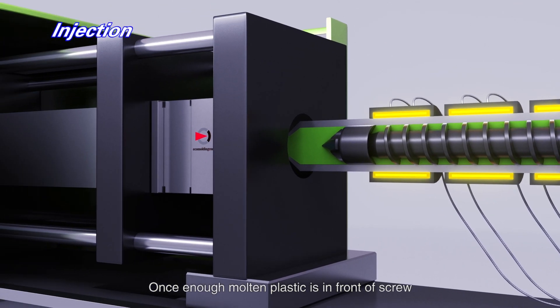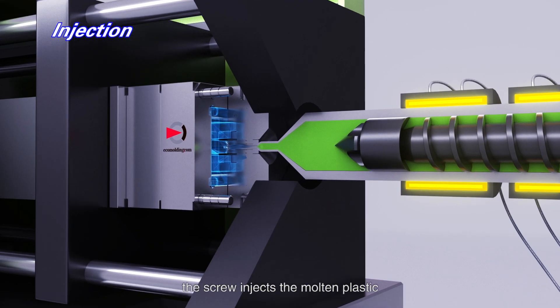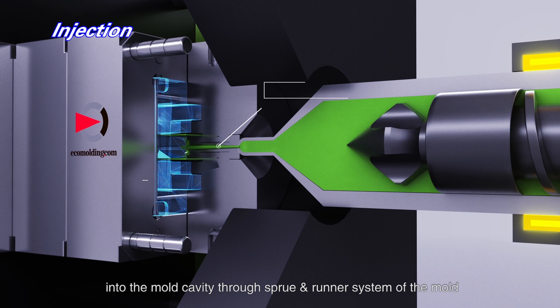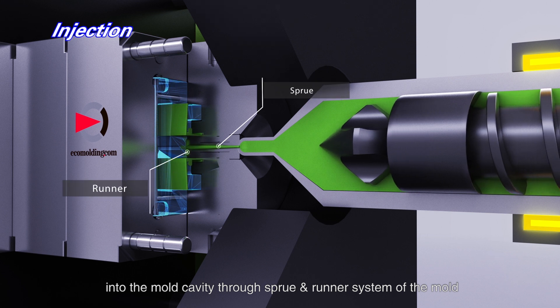Once enough molten plastic is in front of the screw, the screw injects the molten plastic into the mold cavity through the sprue and runner system of the mold.